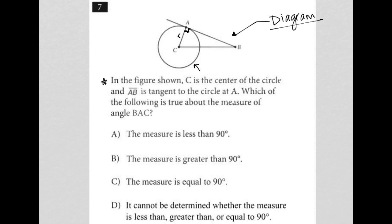So the question says, in the figure shown, C is the center of the circle. Yep, could tell that. And AB is tangent to the circle at A. Yes. Which of the following is true about the measure of angle BAC?